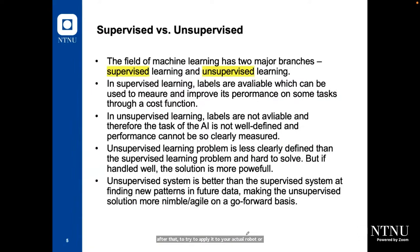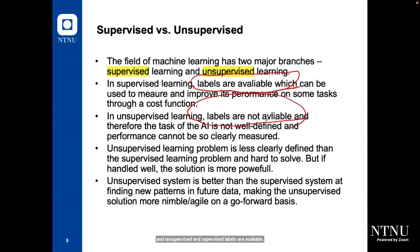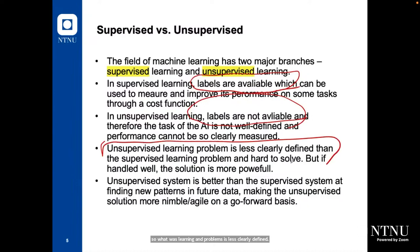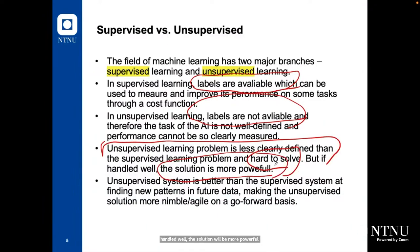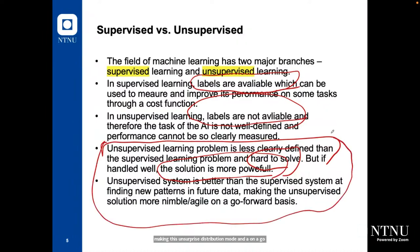Machine learning has two major branches: supervised and unsupervised. In supervised, labels are available. In unsupervised, there are no labels. Unsupervised learning problems are less clearly defined and harder to solve. But if handled well, the solution will be more powerful, because most of the data around us is unlabeled. Unsupervised systems are better than supervised systems at finding new patterns in future data, making unsupervised solutions more agile. The outcome from unsupervised learning can be really much better than from supervised learning.